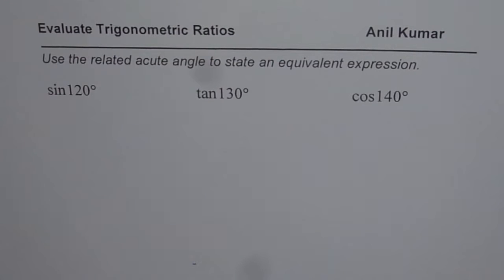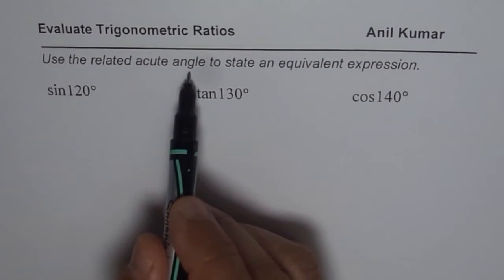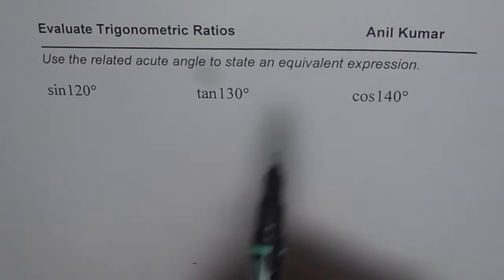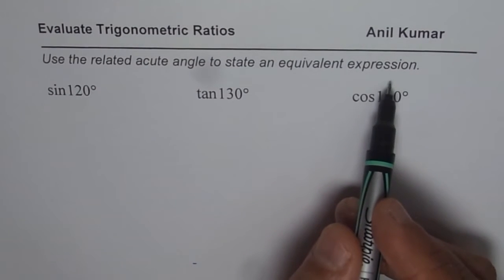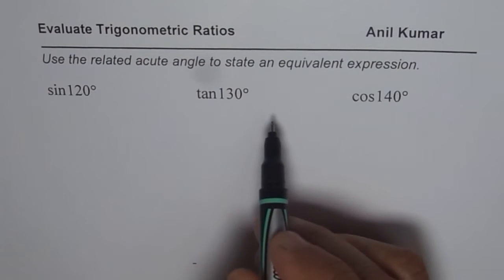I am Anil Kumar and in this video you are going to learn the technique of finding equivalent expressions using the related acute angle and CAST rule. The question here is: use the related acute angle to state equivalent expressions. Equivalent expressions means that the trigonometric ratio should have the same value.